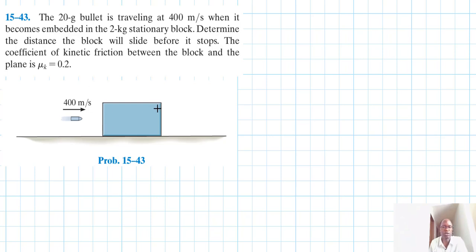So we have a bullet here that gets embedded in a stationary block. Let's call this B for bullet and this stationary block. The coefficient here, of course, it will have some weight. We'll have some weight here, we'll have some normal force. Then we'll have some friction in that direction, like so.